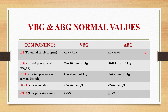In ABG, pH ranges from 7.35 to 7.45. PO2 ranges from 80 to 100 millimeter of mercury. PCO2 ranges from 35 to 45 millimeter of mercury. Bicarbonate ranges from 22 to 26 milli-equivalent per liter and the oxygen saturation is more than or equal to 95 percent.